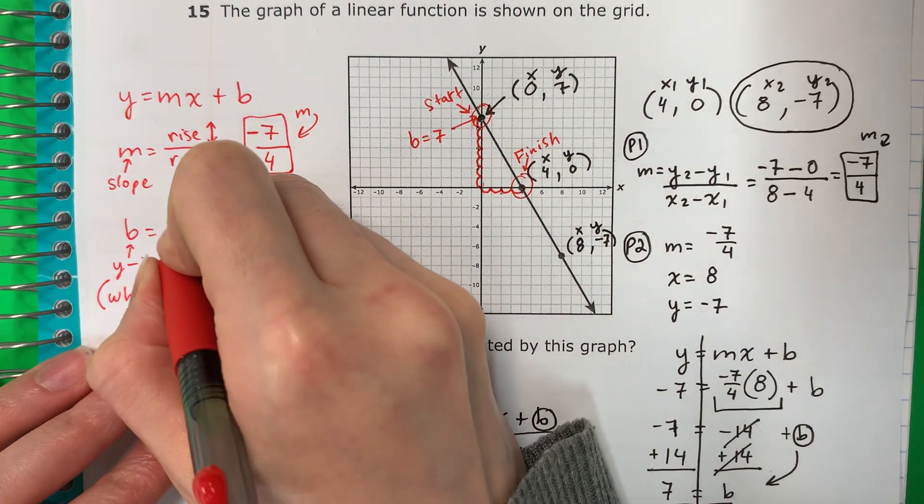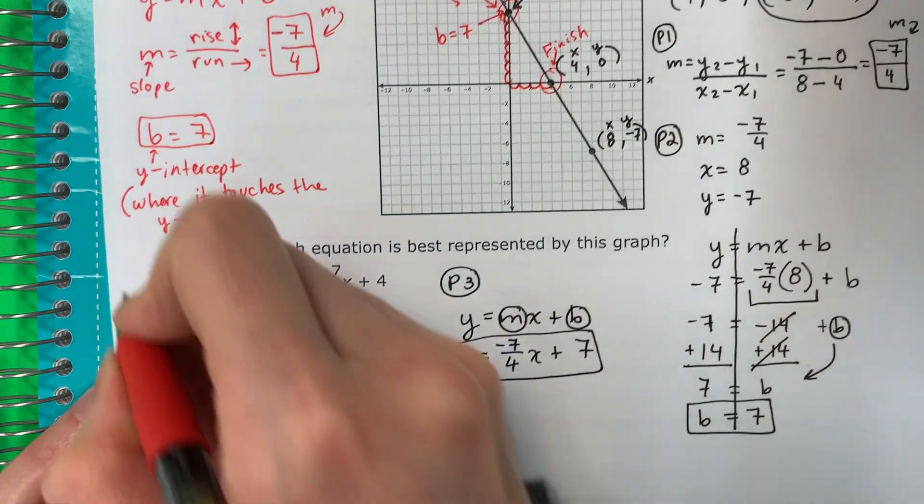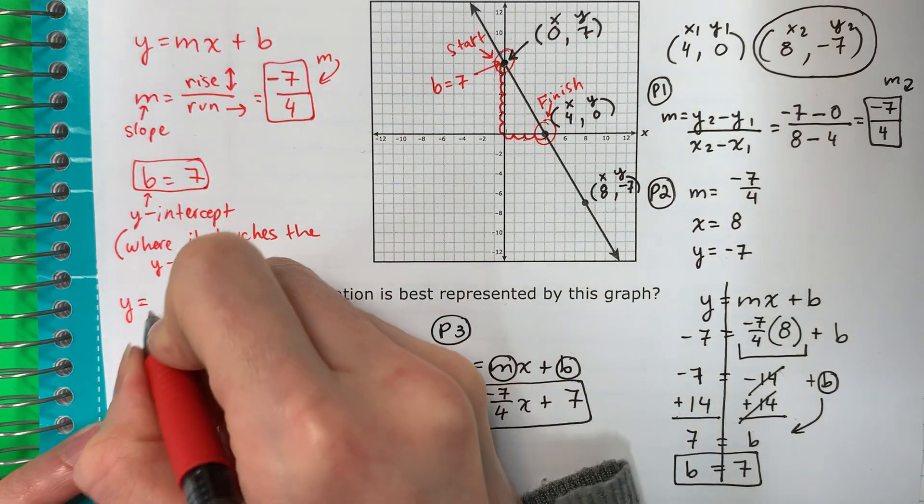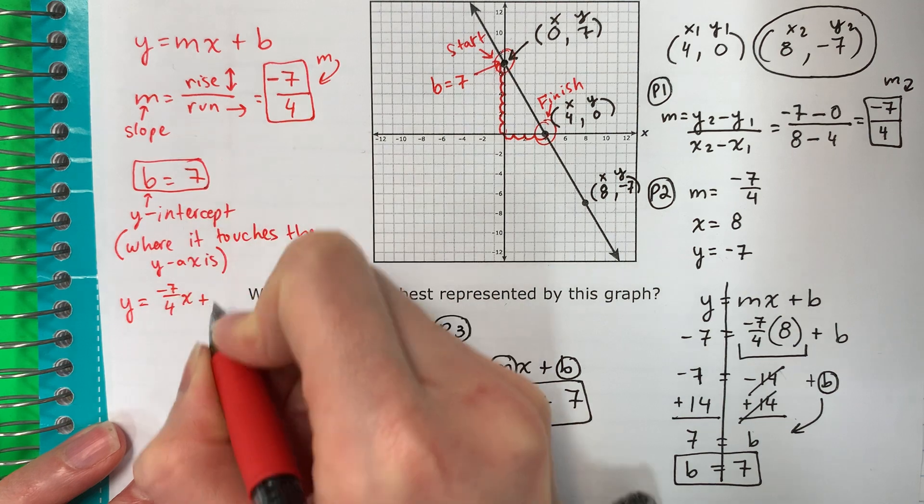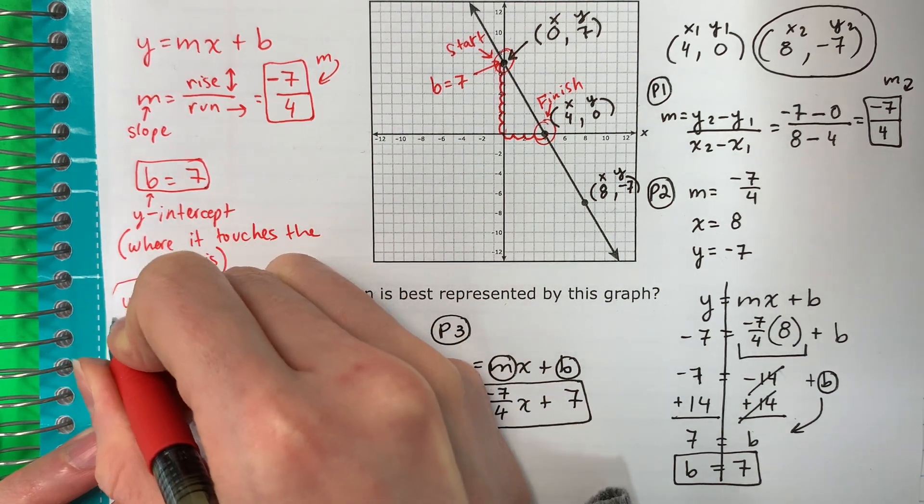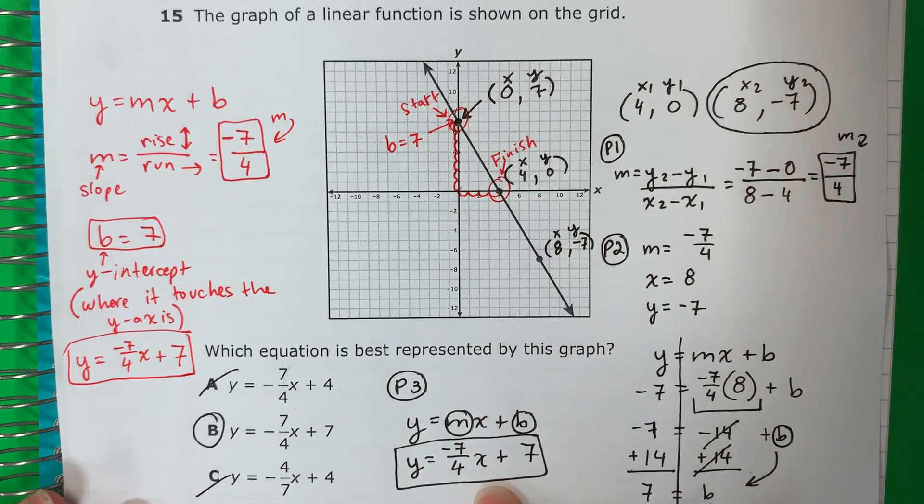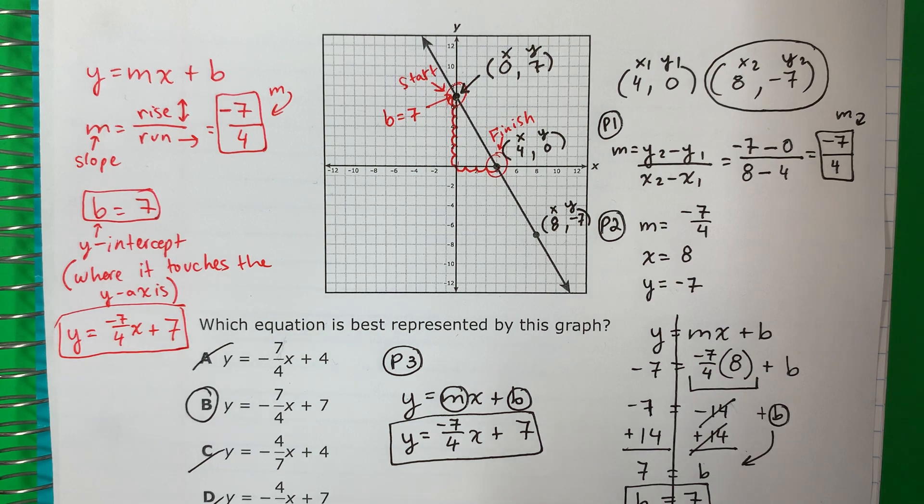So, B is seven. So, you can just write. Y equals M, negative seven-fourths, X, plus B is seven. And that's the same like I had in part three. So, you can do it however you want.